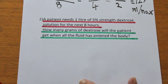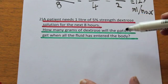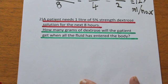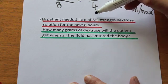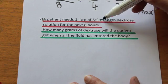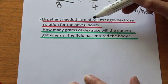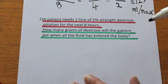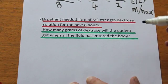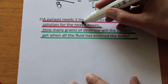In the second question we're being asked how many grams of dextrose the patient will receive when the fluid has gone into the body. In this case we need to look at the five percent, which tells us the strength of the solution and therefore how much dextrose sugar has gone into the liquid. In this question we do not need the eight hours.